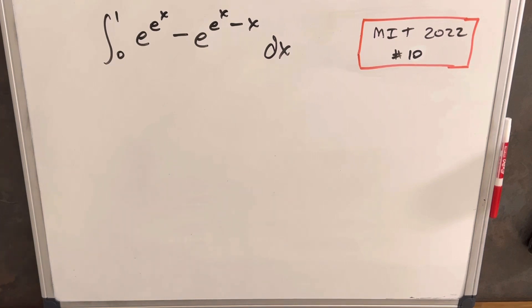Hey, we have another integral from MIT Integration Bee 2022. This was problem number 10 on the qualifying exam. We got an integral from 0 to 1, e^(e^x) - e^(e^(x-x)) dx.